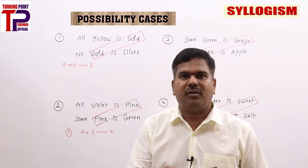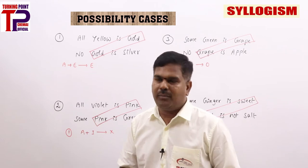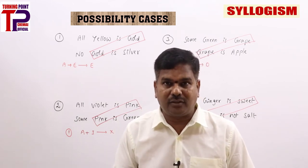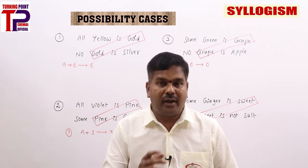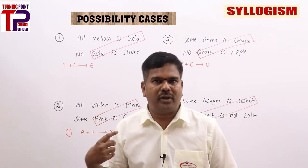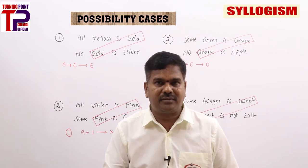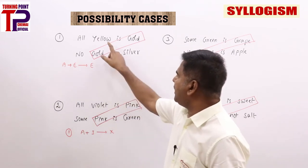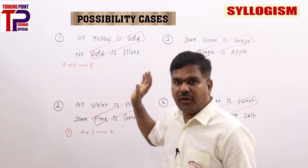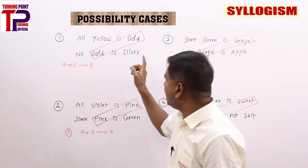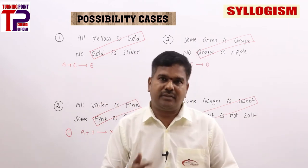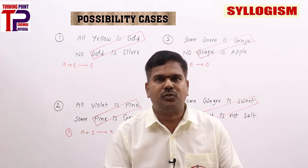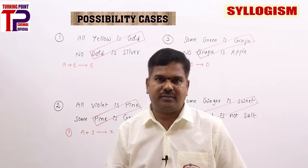Now finding possibility cases: A plus E is E, so you get 'no yellow is silver.' For E statement, there are no possibilities. If asked whether we can convert E into O and take possibilities from that — strictly no. From immediate inferences we should not consider possibility cases. From the first statement 'all yellow is gold' — for A, possibilities are A-reverse and O-reverse. So 'all gold is yellow' being a possibility: yes. 'Some gold is not yellow' being a possibility: yes. From E statement there are no possibilities — that's it, only two possibilities here.